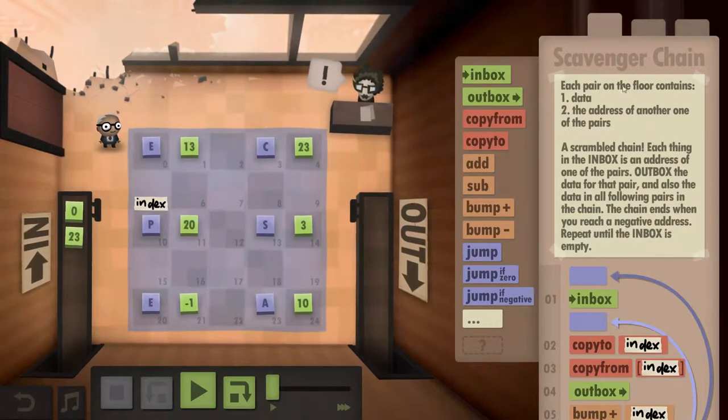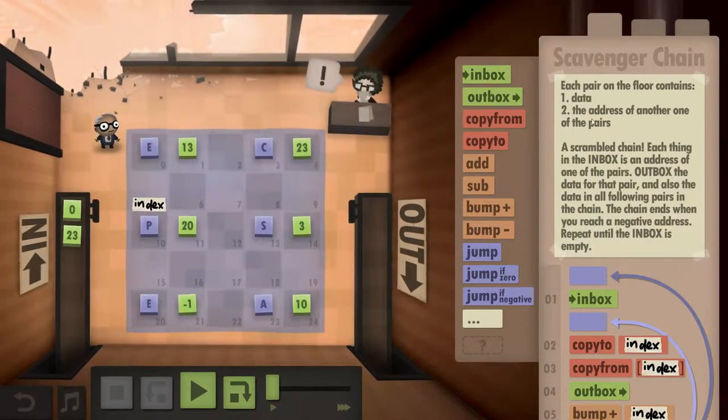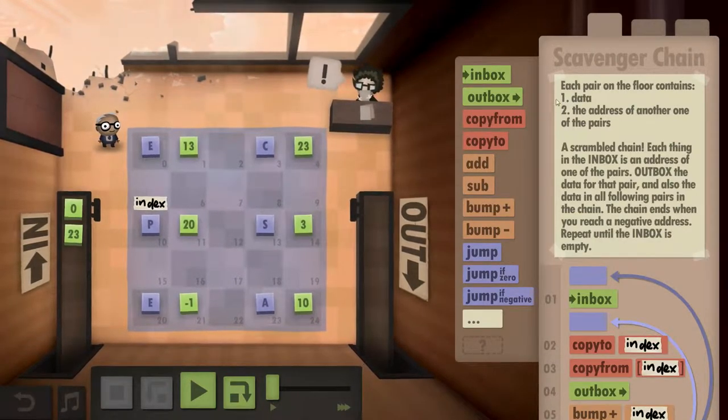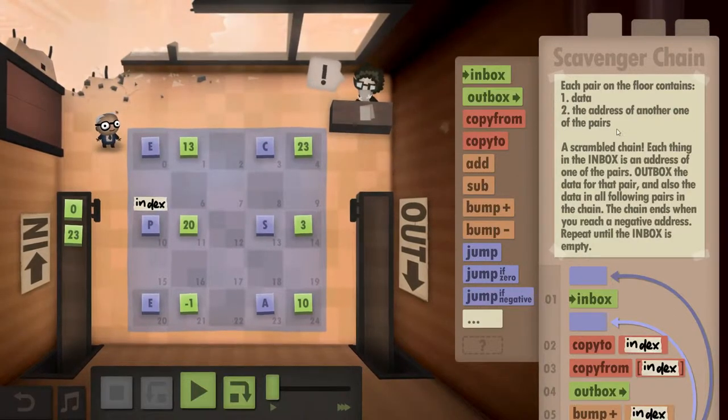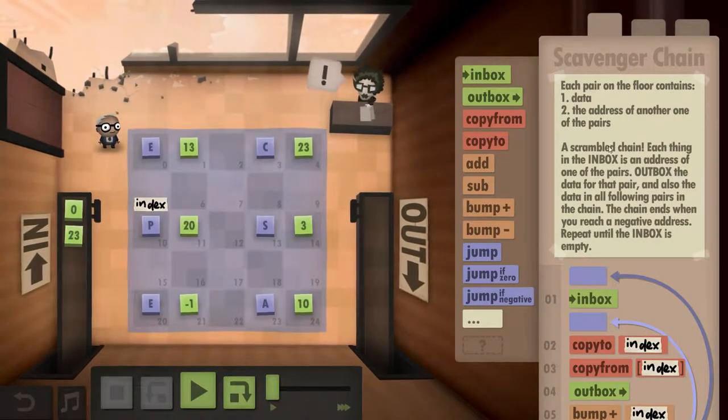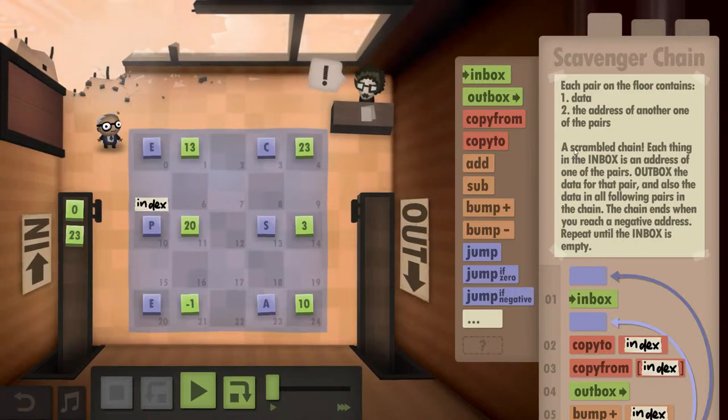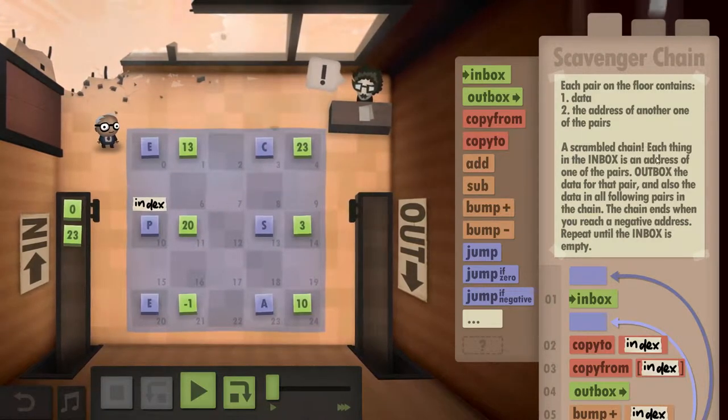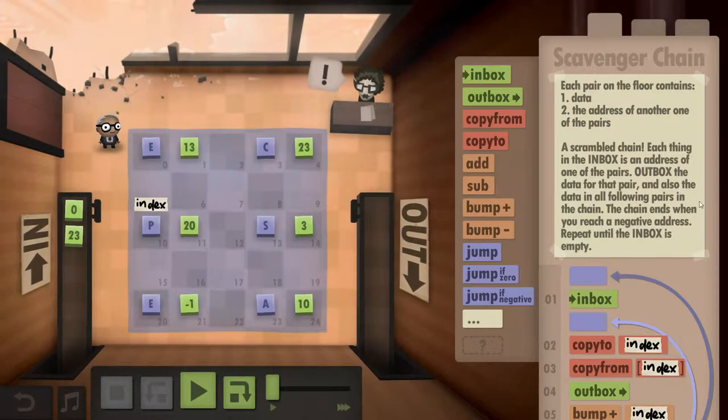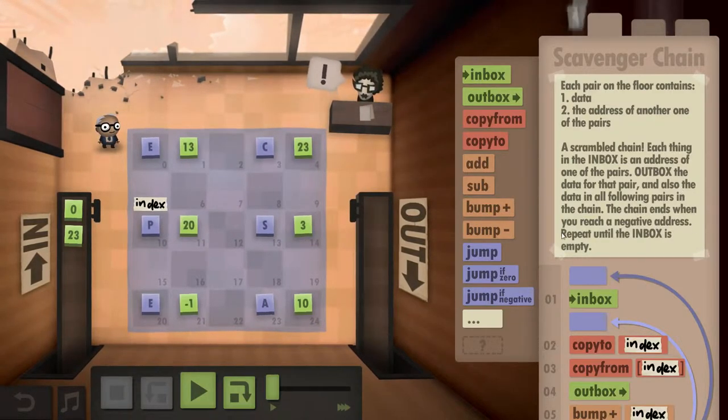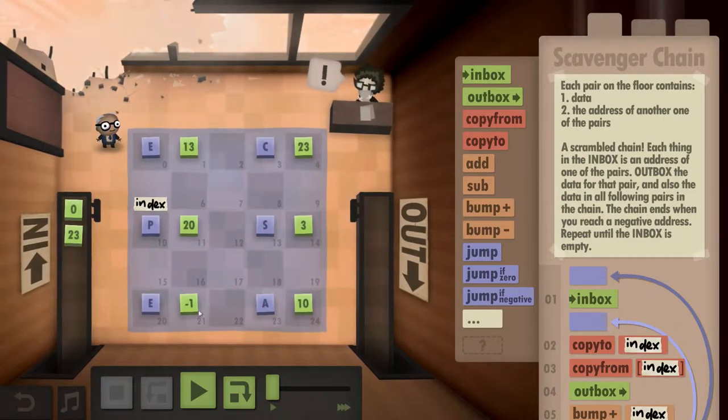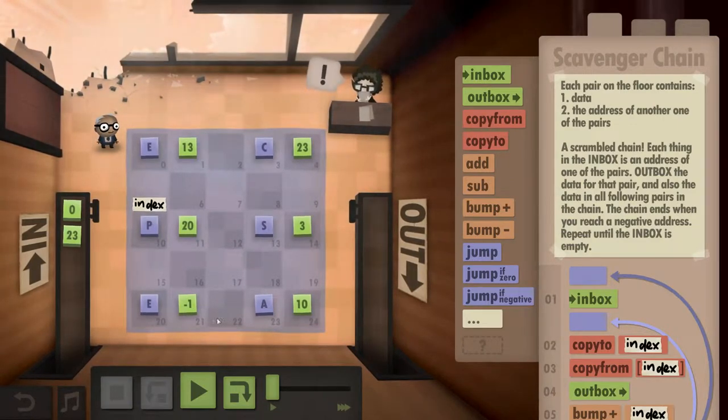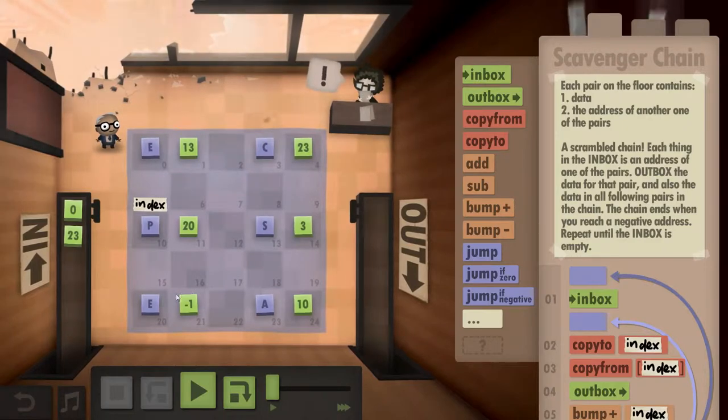So here each pair on the floor contains both data and the address of another one of those pairs. A scramble chain, yeah well. Each thing in the inbox is an address of one of the pairs. Outbox the data for that pair and also data in the following pairs in the chain. The chain ends when you reach a negative address. So basically only if you hit this field because otherwise you wouldn't ever get a negative address.